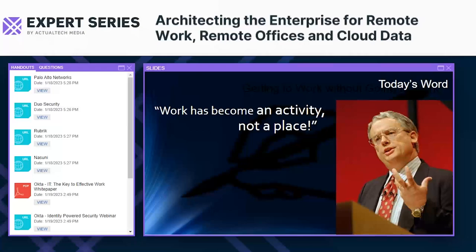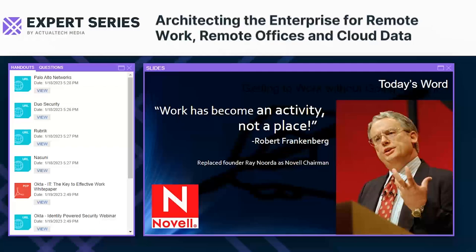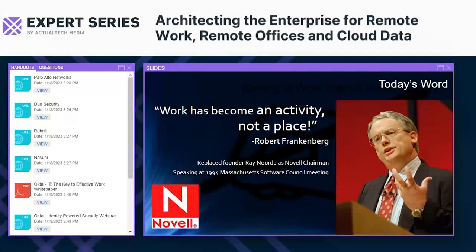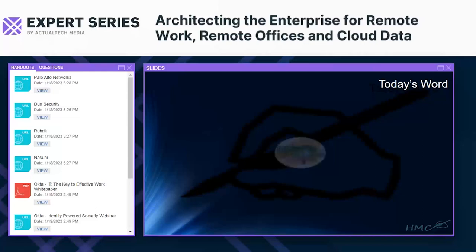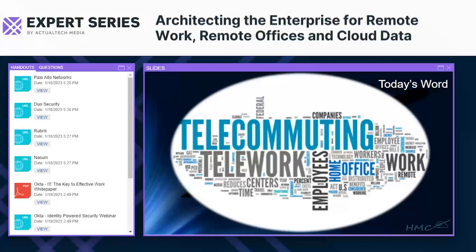In 1994, a gentleman said to the world: 'Work has become an activity, not a place.' What he meant was we can now get to work without having to leave where we are — which sounded great. That gentleman is Robert Frankenberg, who at the time was the chairman of Novell Corporation. He said it at the Massachusetts Software Council meeting. The word that came out of it — which is today's word — is telecommuting.